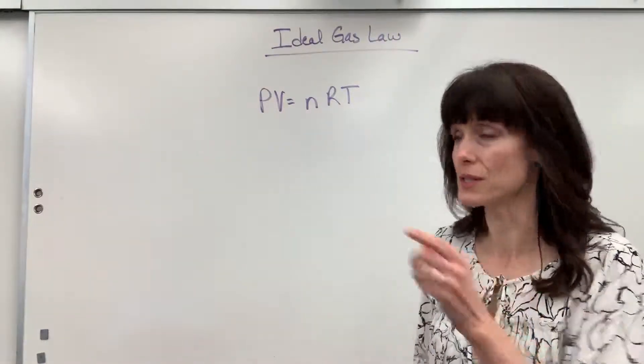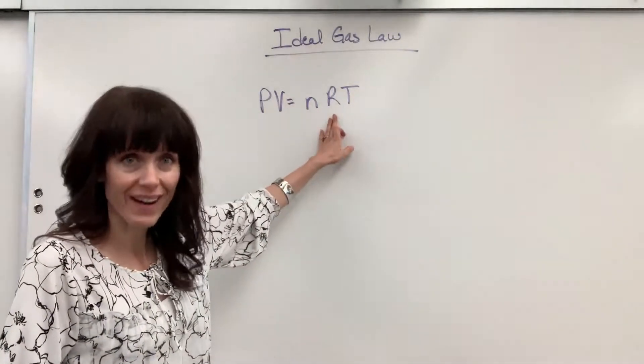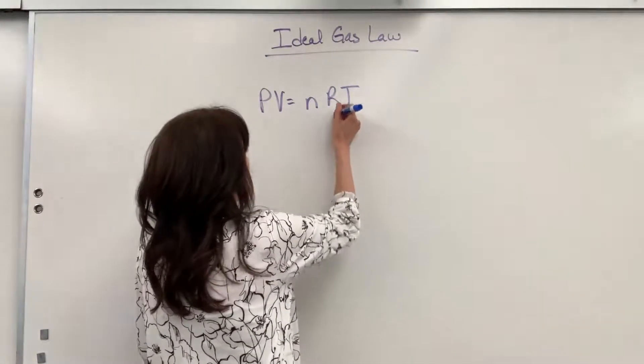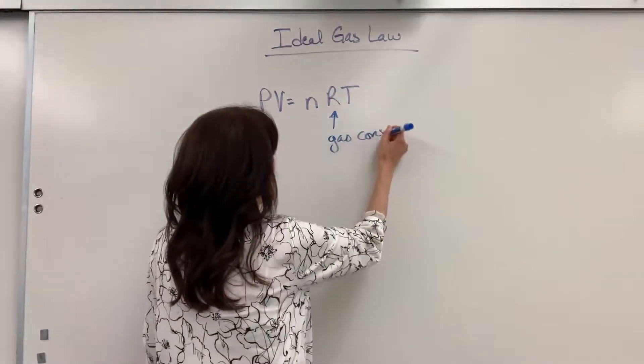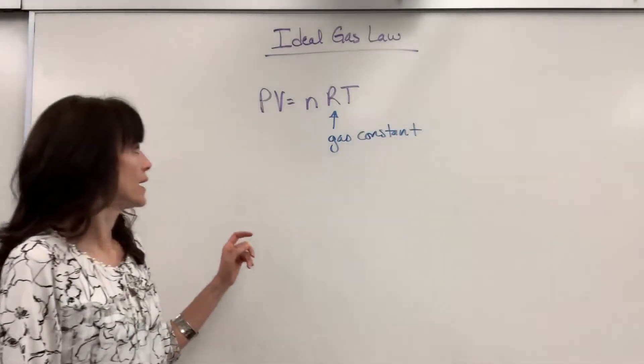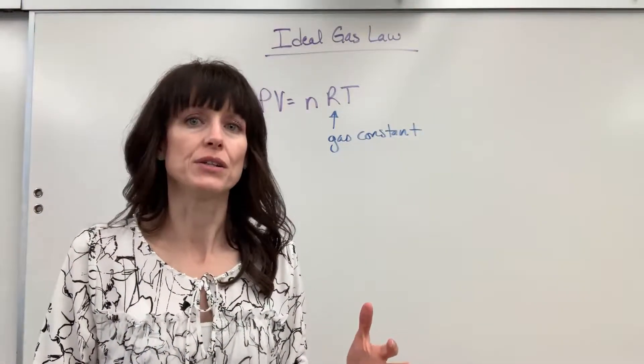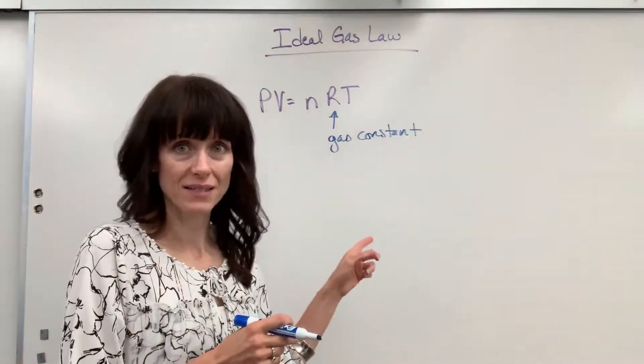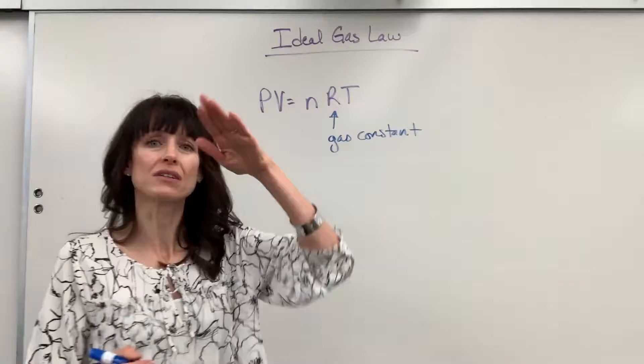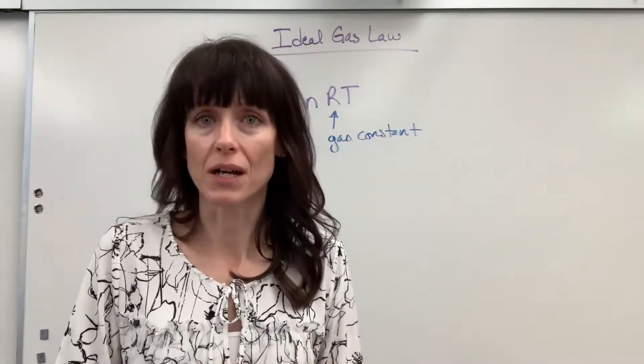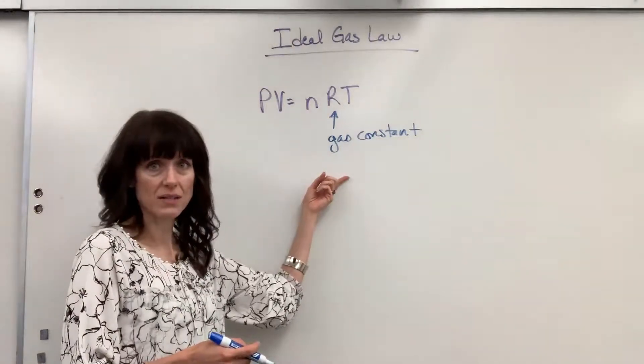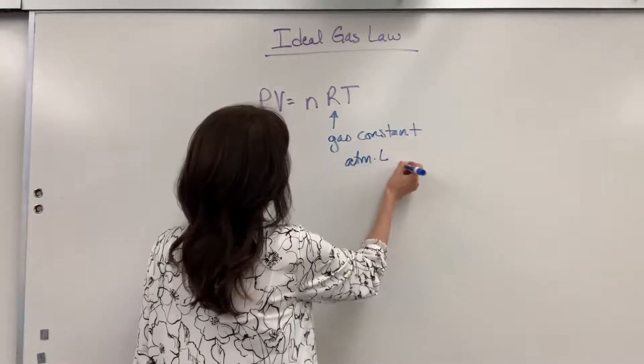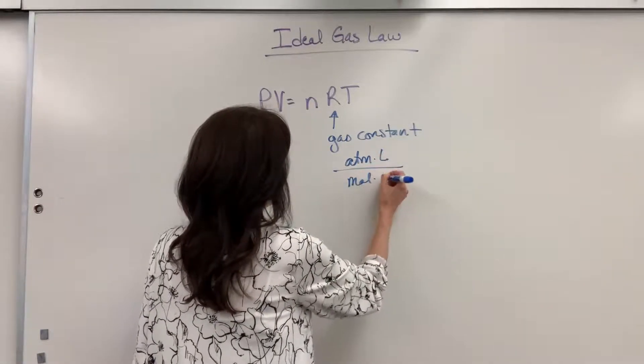So let's label everything with units. I'm going to start with R, and this is significant. R dictates every other unit. R is called the gas constant. Now you're going to use the gas constant in a couple of places in chemistry. You're going to use it related to energy, a delta G, and you're also going to use it in gases. Here is the unit for the gas constant when we're using the ideal gas law. It is going to be ATM times liter divided by mole times Kelvin.